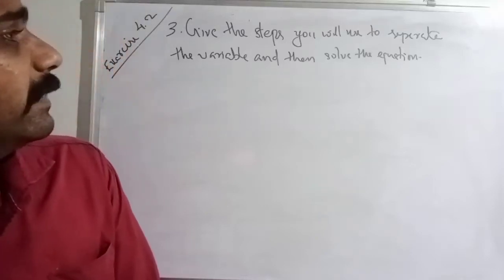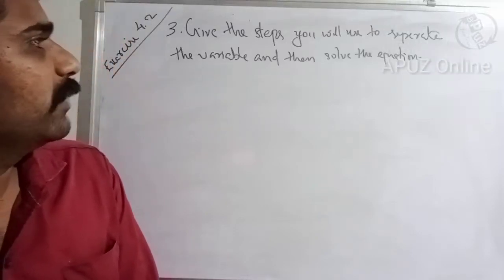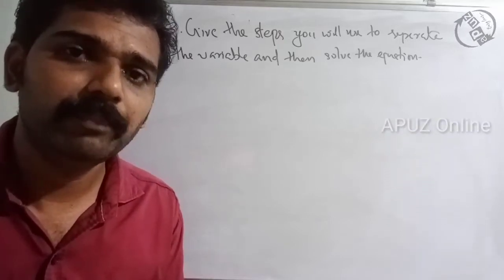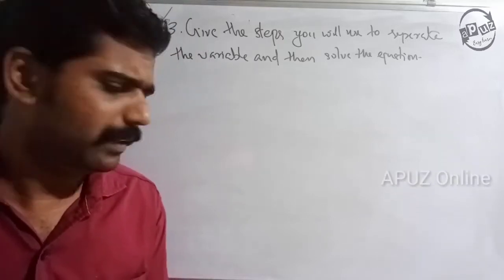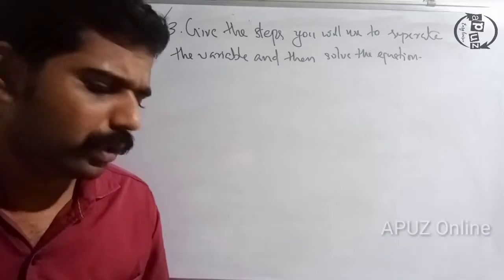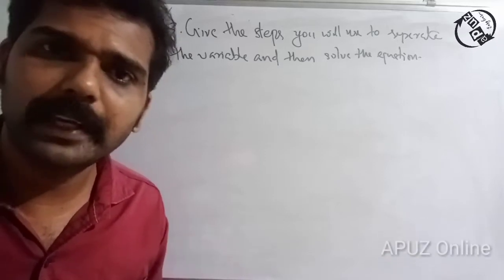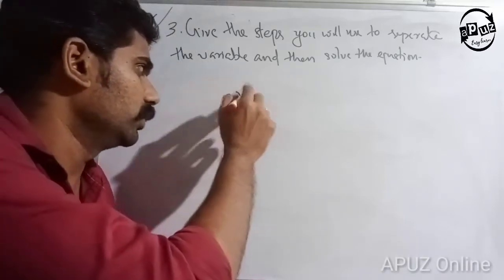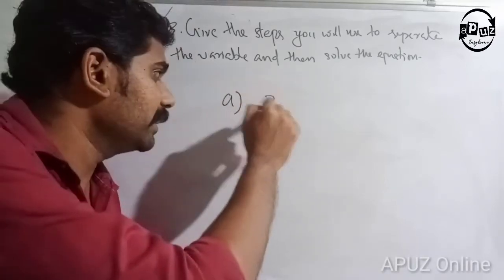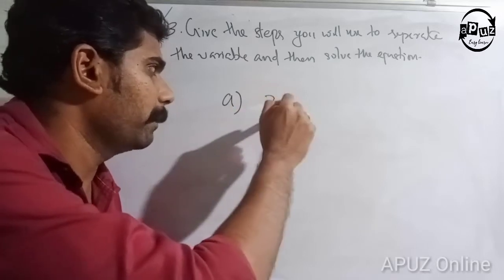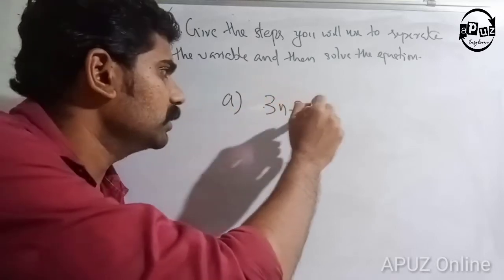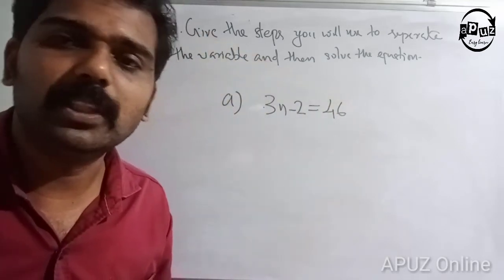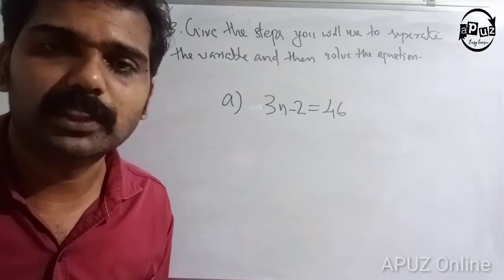Third question: give the steps you will use to separate the variable and then solve the equation. First question: a is equal to 3n minus 2. So 3n minus 2 is equal to 46.